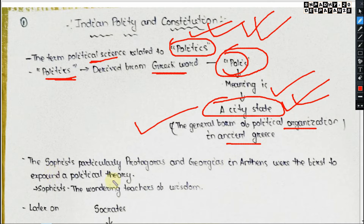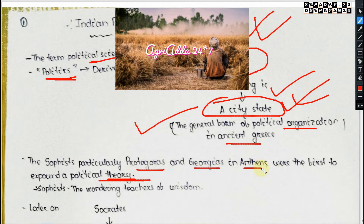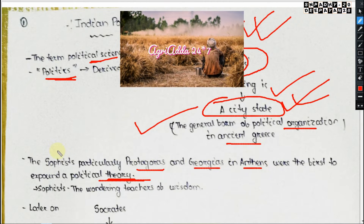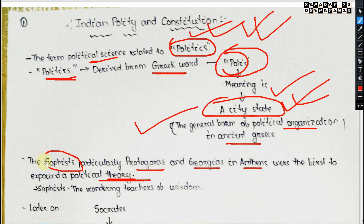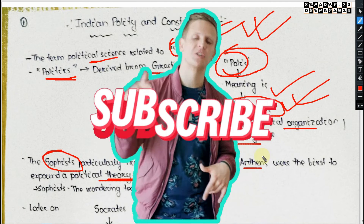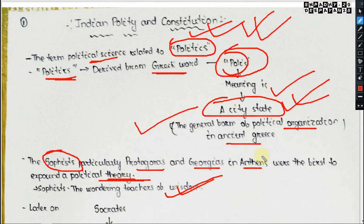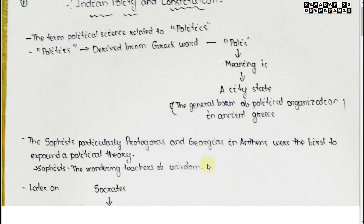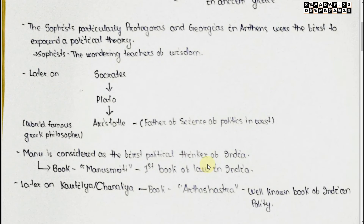The sophists — particularly Protagoras and Gorgias in Athens — were the first to expound a political theory. This may come in the exam: who expounded the political theory for the first time? It was Protagoras and Gorgias. Sophist means 'wandering teachers of wisdom' in ancient Greece.